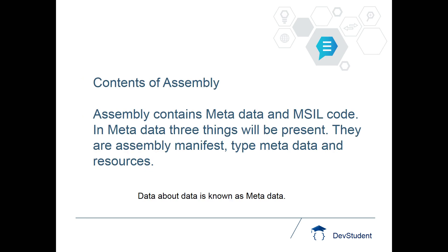Now coming to the contents of an assembly — in every assembly some contents will be present. An assembly contains metadata and MSIL code. When source code is compiled for the first time it is converted into MSIL and it is present in the assembly. Along with MSIL code, metadata will also be present. Metadata means data about data — the DLL's own information will be present inside the DLL in metadata.